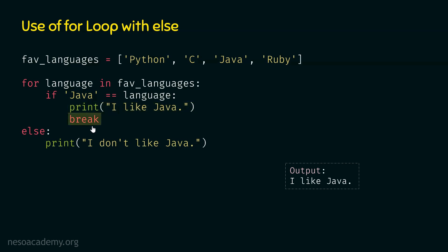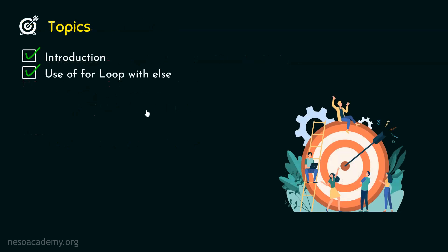After 'I like Java' is printed, the break keyword is encountered, meaning the loop is now terminated abnormally. Because of this break keyword, the else block will not be executed. The output of this program is 'I like Java'. With this, we have understood how for loop works with else block. Thank you for watching this presentation — I will see you in the next one.